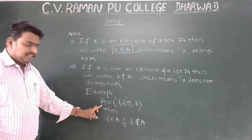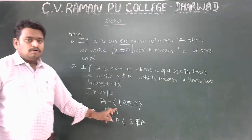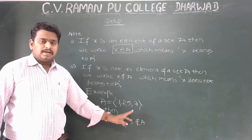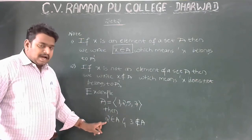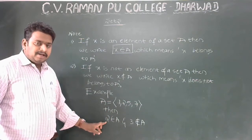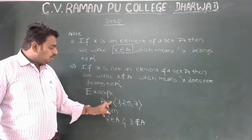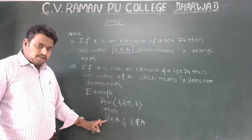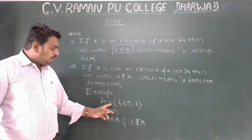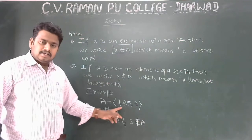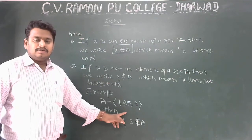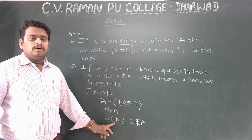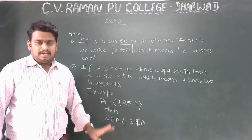For example, I have the set A = {1, 2, 5, 7}. The element 2 belongs to set A — just check, the element 2 is present in set A. So I write: 2 ∈ A.